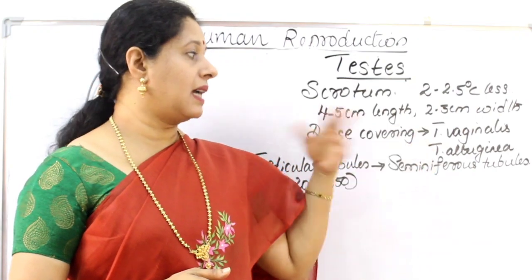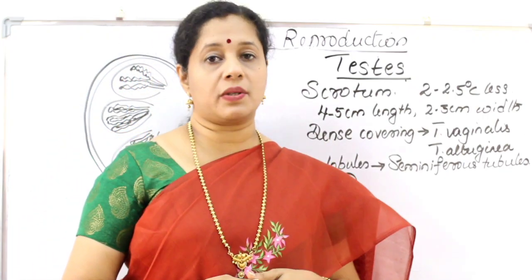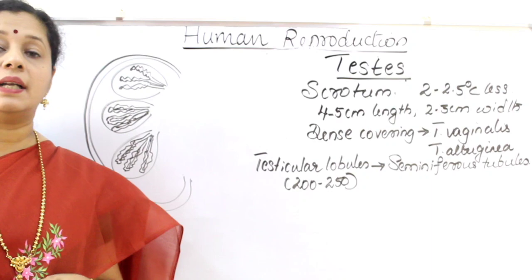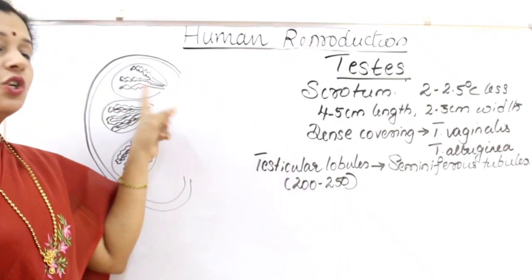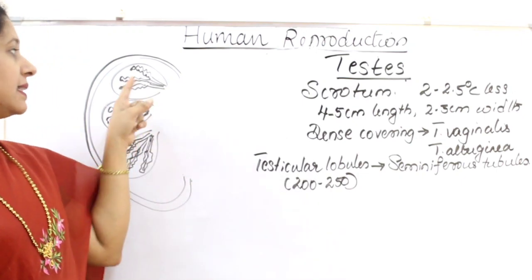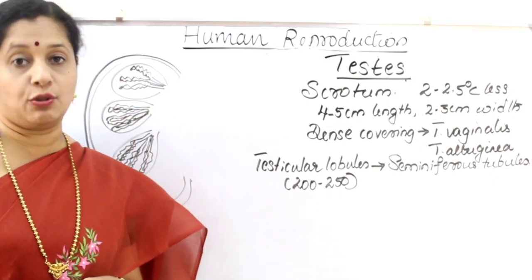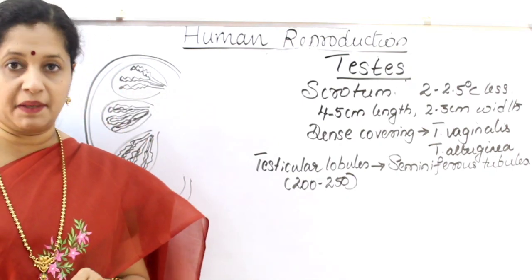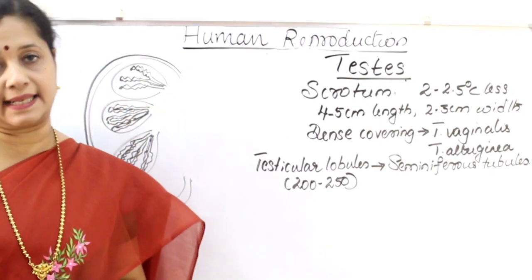The tunica has two layers: tunica vaginalis is the outer covering and tunica albuginea is the inner covering. Looking at the cross section of the testis, it has many compartments called testicular lobules. Each testis has around 200 to 250 testicular lobules. Within each testicular lobule there are seminiferous tubules — highly coiled tubules. Each testicular lobule may contain 1 to 3 seminiferous tubules, so on average up to 750 seminiferous tubules are present in one testis.